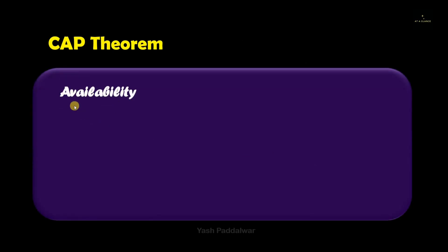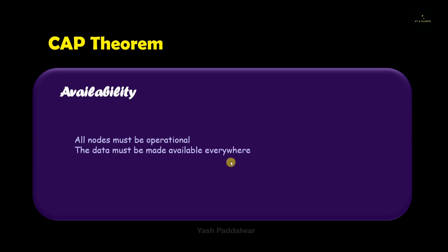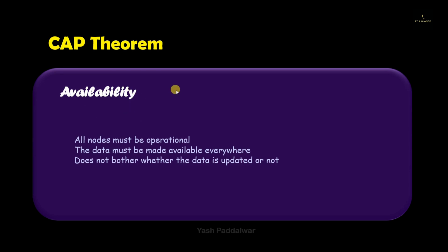Now let's move on to another property from the CAP theorem: availability. It states that all the nodes inside the distributed system must be operational and the data must be available everywhere. That means whenever a client is requesting or modifying some data, it should always be available and the system should not deny the request. Availability states that the data may or may not always be updated, but it will always be available — the data may not contain the most recent write operation, but it will always be accessible.